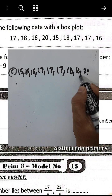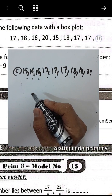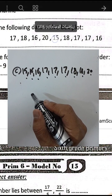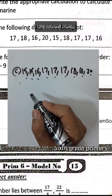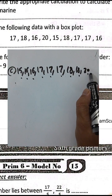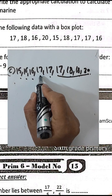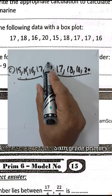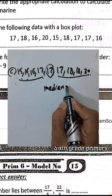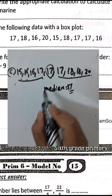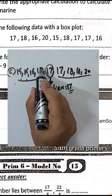Count the values — we have 9 total. We can remove 4 numbers from each side, leaving 17 in the middle. The median is 17.